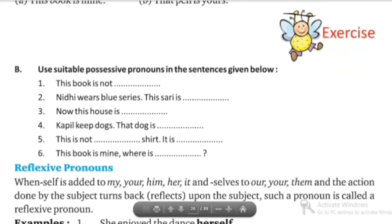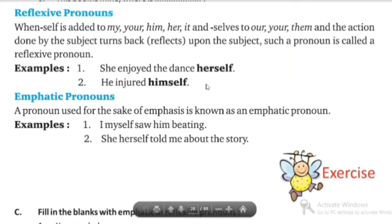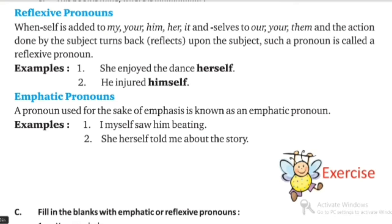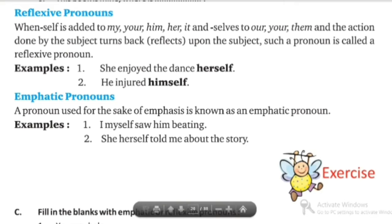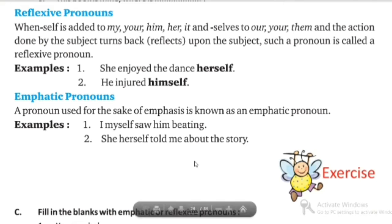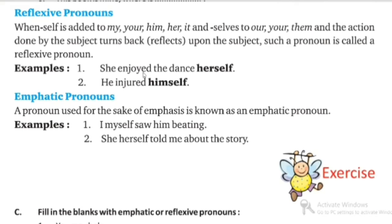Next is reflexive pronoun. In reflexive pronouns, the action done by the subject turns back or reflects upon the subject. This pronoun is called a reflexive pronoun. Like 'she injured herself during the dance.' He injured himself. In this type of pronoun, words like myself, yourself, himself, ourselves are included. Reflexive pronouns show the reflection of the subject.